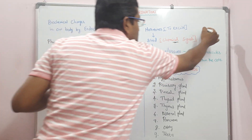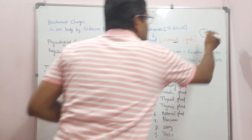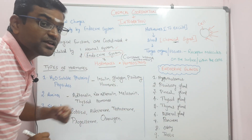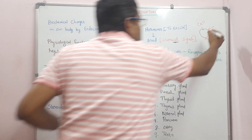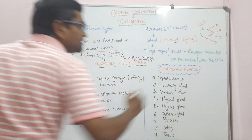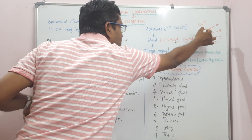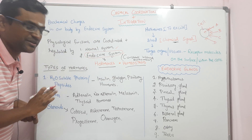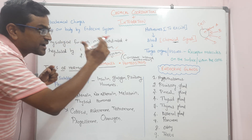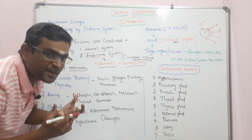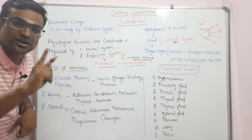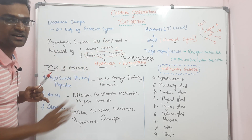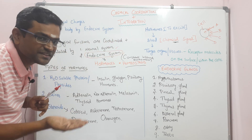If you look at a cell, multiple hormones may approach it. How does the cell respond — to hormone A, B, C, or D? It depends on the receptor. The receptor may be present on the cell surface or inside the cell. A single hormone may have multiple effects on the same cell or on different cells. This hormone action mechanism is a basic concept.